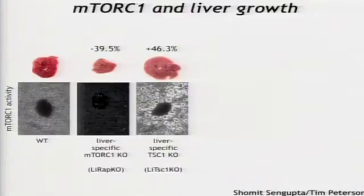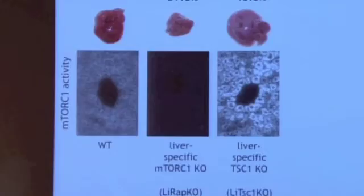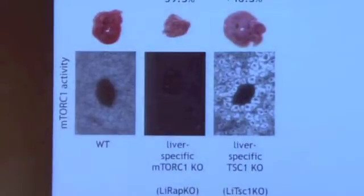Let me show you a little bit about growth control by mTORC1 in vivo. What you're looking at here is a mouse liver. Here's a normal liver; next to it is a liver in which we've inhibited mTORC1 genetically — you can see it's about 40% smaller and pathway activity is down. Conversely, here we've activated the pathway, and the liver is larger and pathway activity is up.